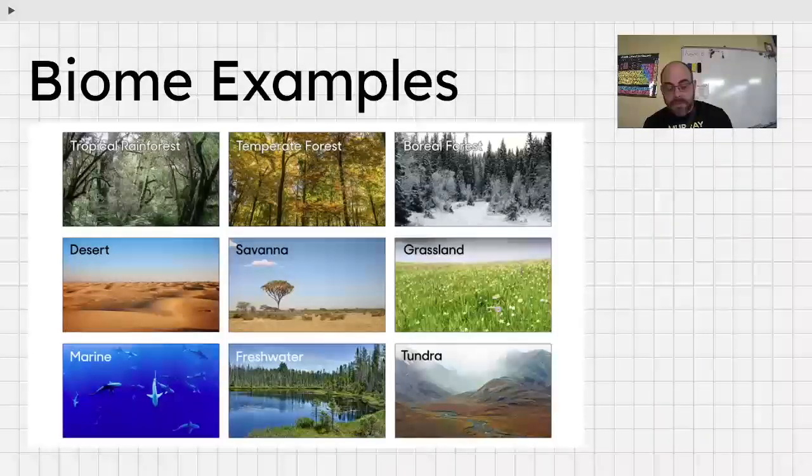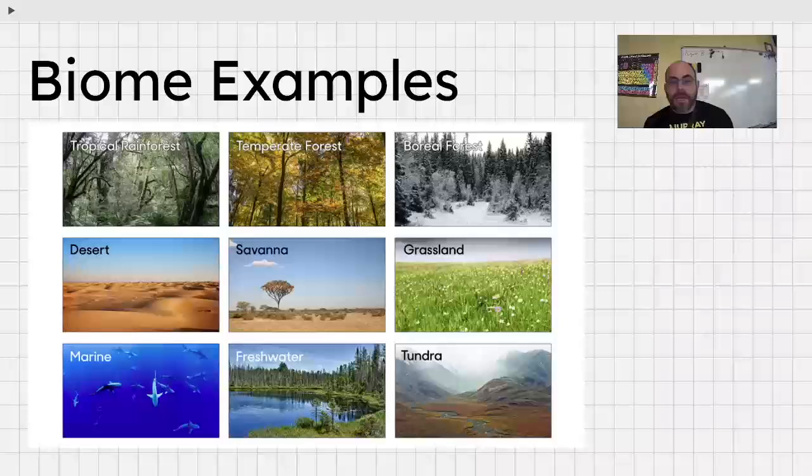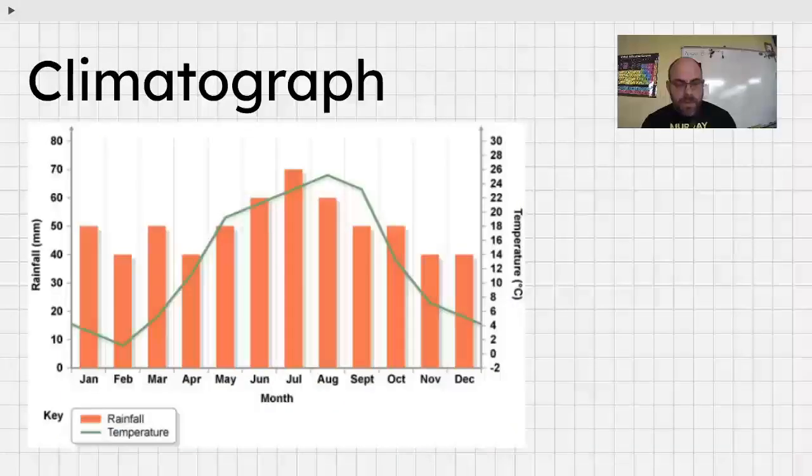The desert, extremely dry, extremely hot. Organisms there are adapted to low amounts of water and high temperatures. These are just a few examples of biomes. And so, understand that when you're talking about that, again, you're talking about similar climate and community.